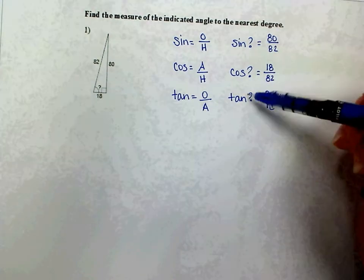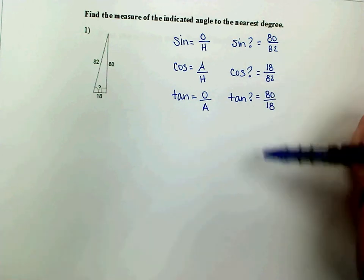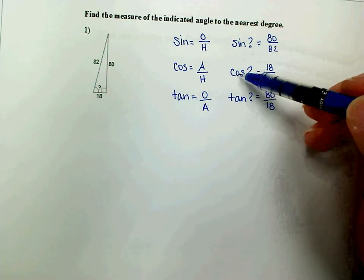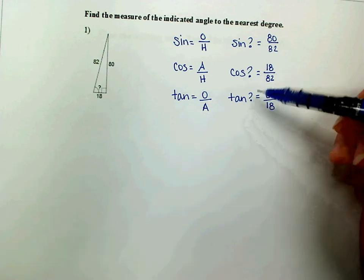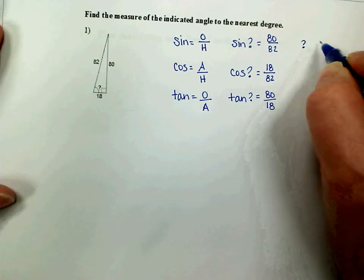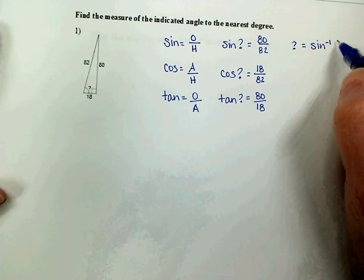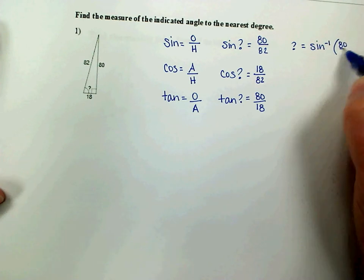Now to find our angle, we have to undo the trig function that is being done to that angle. Remember, that's an operation on that angle. So we have to do the inverse operation to undo that. So to find our angle, if we're using sine, we're going to have to find the inverse sine of that ratio, 80 over 82.